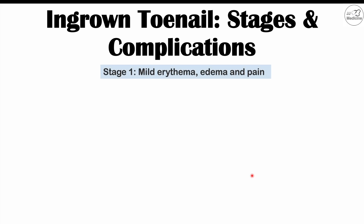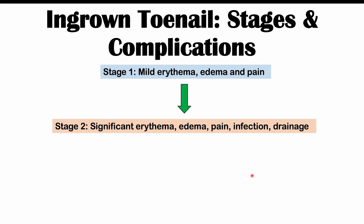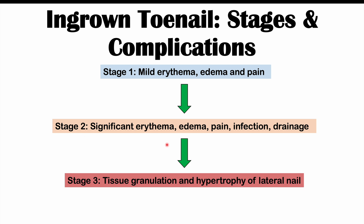There are three stages of an ingrown toenail. Stage one involves mild erythema, edema, and pain. Stage two features significant erythema, edema, and pain, with possible infection and drainage. Stage three includes everything in stage two plus tissue granulation and hypertrophy of the lateral nail.